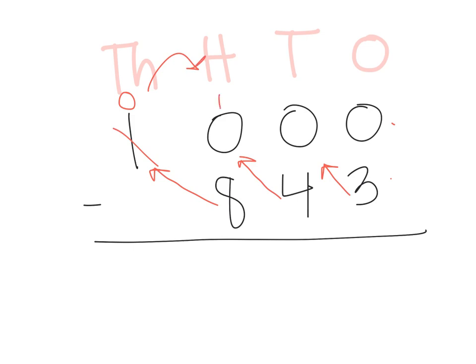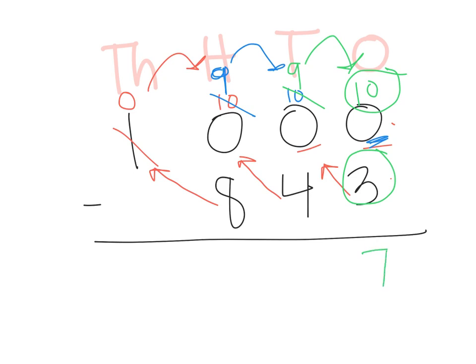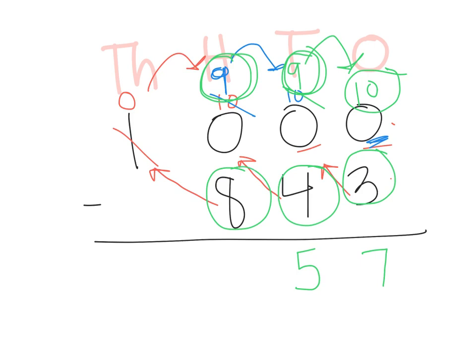We're going to trade 10 over to the hundreds place — we have 10 hundreds, which is awesome, but we still have 0 in the tens and ones place. So we're going to cross off one of those hundreds flats and ungroup it to make 10 ten-sticks. Now we have 10 in the tens place and 9 in the hundreds place, but still 0 in the ones place. So we go to the tens place and borrow — trade 10 ones over. We have 10 take away 3, which is 7. We have 9 take away 4, which is 5. We have 9 take away 8, which is 1. Our answer is 157.